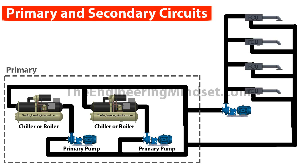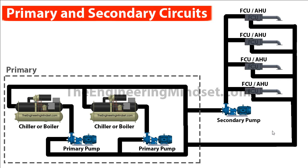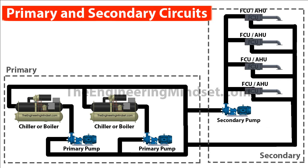The other circuit in this system is known as the secondary circuit. This contains the secondary pumps as well as the risers — the pipes that run up the height of the building. This will also include any of the heat transfer plant items such as fan coil units, air handling units, chilled beams, underfloor heating, or radiators. Anything where heat is transferred into the space or into the air is part of the secondary system.